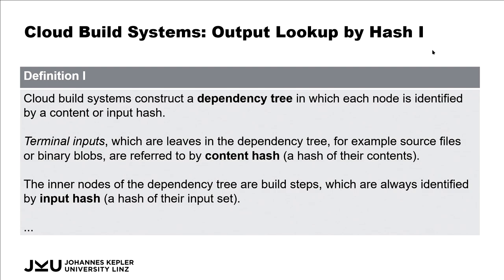That's still very straightforward. There are some terminal inputs in that dependency tree, which are the leaves — those are either source files or binary blobs. Those terminal inputs are referred to by a content hash, a hash of their contents. The inner nodes in the dependency tree are build steps, and they are identified by an input hash. That's just how cloud build systems work.